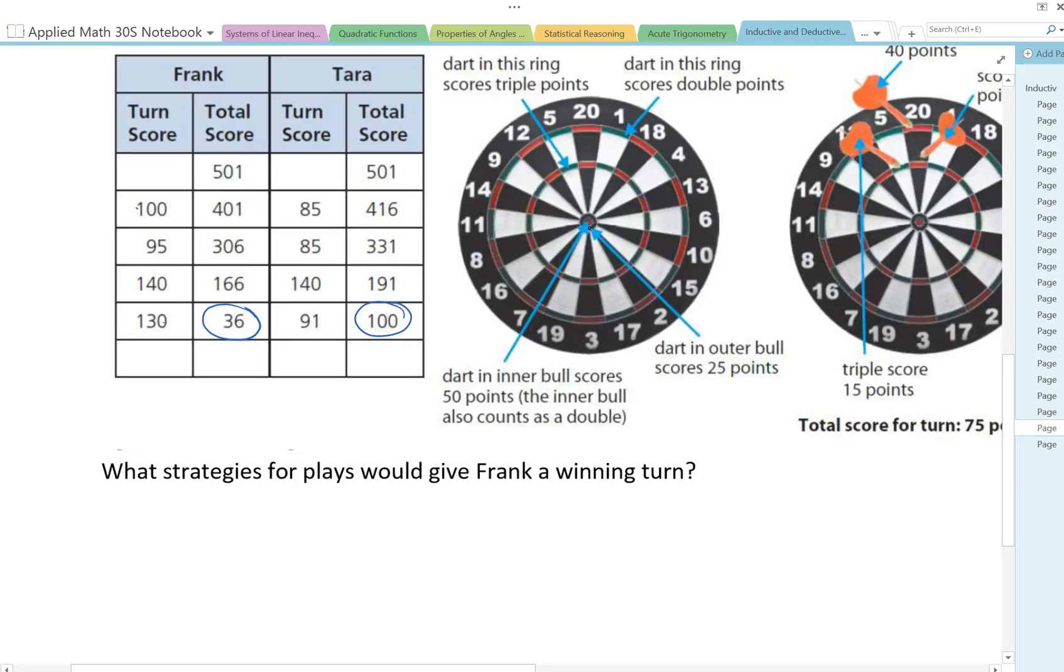So start thinking. I'm going to hit pause and you hit pause on the video and think of all the different combinations using these rules for Frank to score 36.